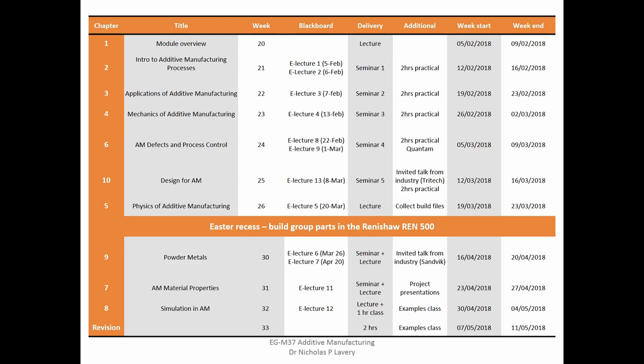Next week we're going to do chapter seven on additive material properties — the properties of materials made by additive, how we test them, what kind of tensile strengths and properties you expect from additive materials. Then a final chapter eight, which is simulation of AM — a very short intro to different aspects of simulation of additive manufacturing. And then we'll start on the examples classes, so we should have at least three: one in week 32 and two in week 33, where we'll go through typical worked examples.